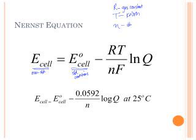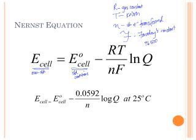N is the number of electrons transferred in the balanced equation. And F is Faraday's constant, which is equal to 96,500 Coulombs per mole of electron.